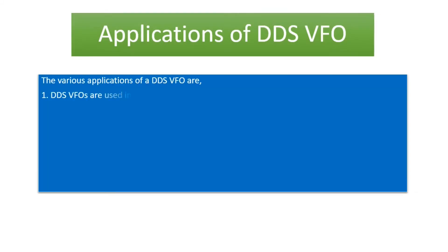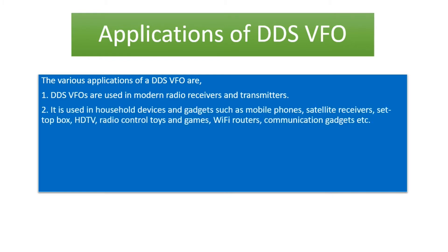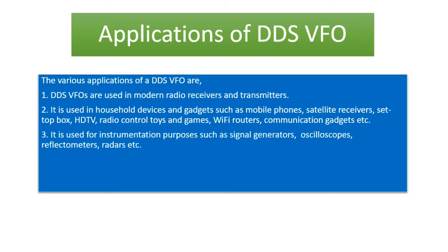Applications of DDS VFO. 1. DDS VFOs are used in modern radio receivers and transmitters. 2. It is used in household devices and gadgets such as mobile phones, satellite receivers, set-top box, HDTV, radio control toys and games, Wi-Fi routers, communication gadgets, etc. 3. It is used for instrumentation purposes such as signal generators, oscilloscopes, reflectometers, radars, etc.